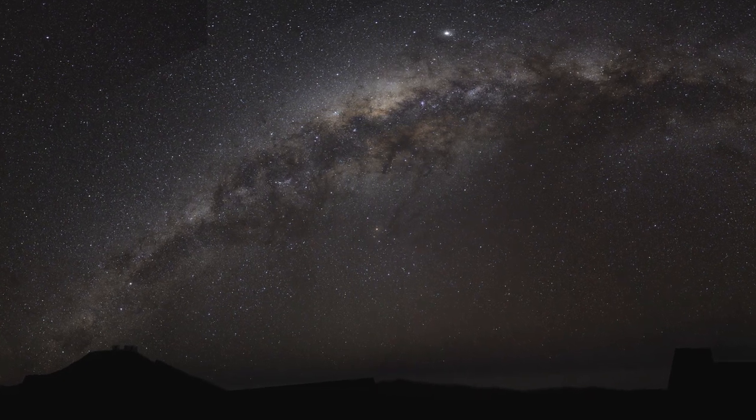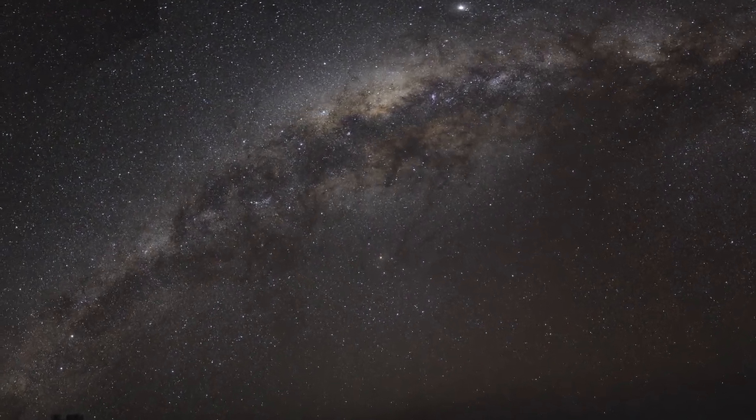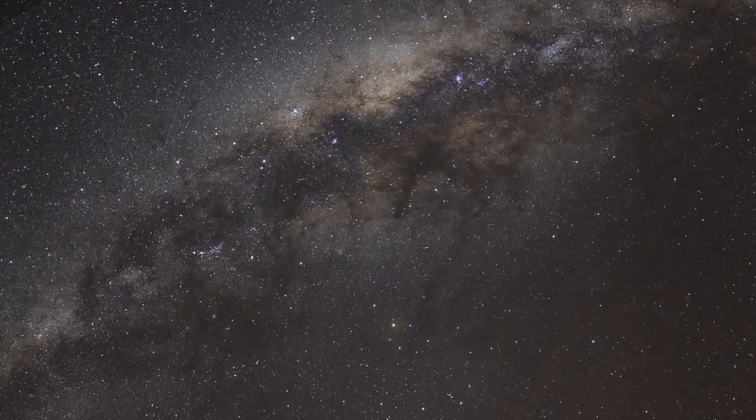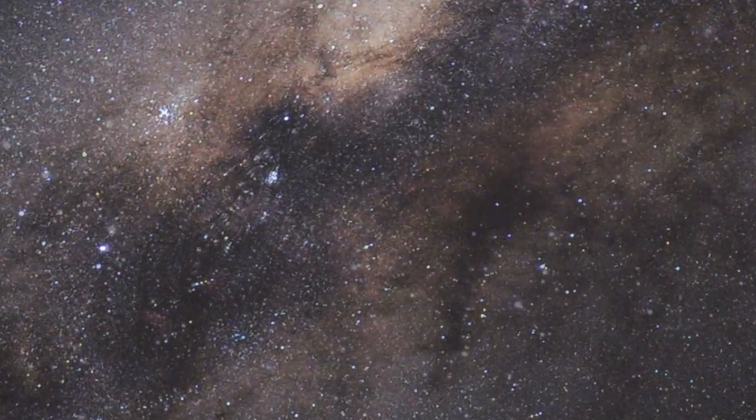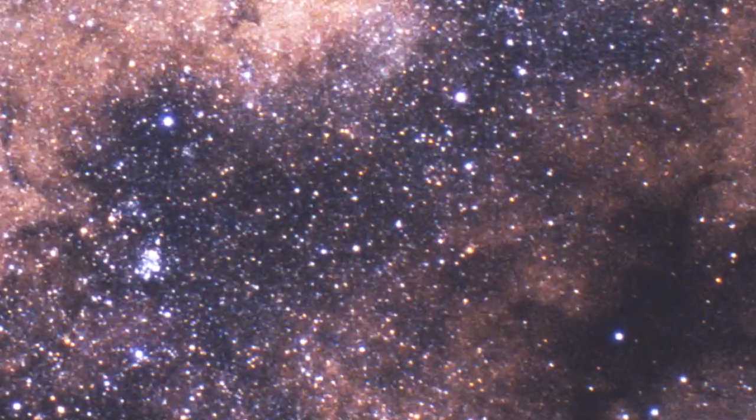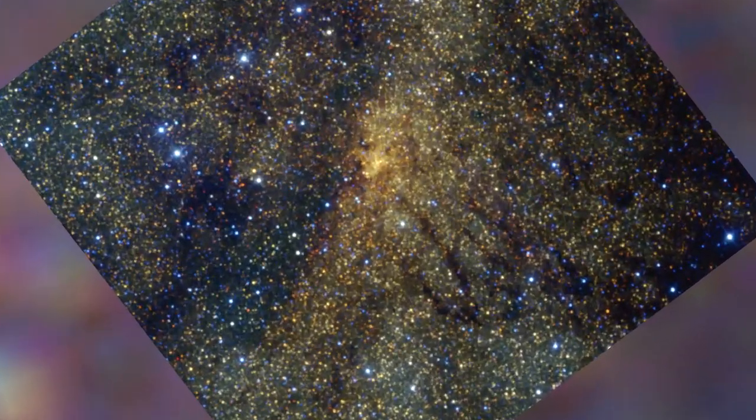Observers under dark skies far from the bright city lights can marvel at the splendour of the Milky Way arching in an imposing band across the sky. Zooming in towards the centre of our galaxy, about 25,000 light years away, you can see that it is composed of myriads of stars. This is a pretty impressive sight.